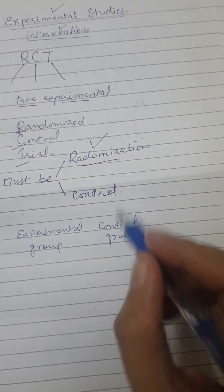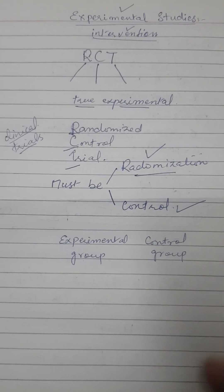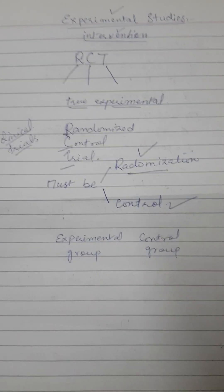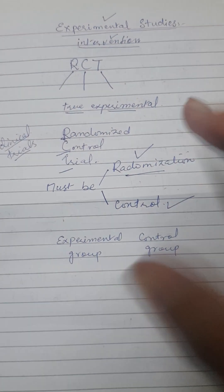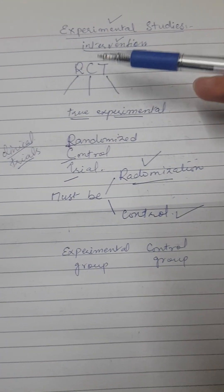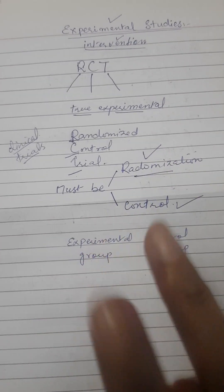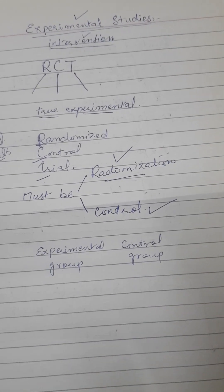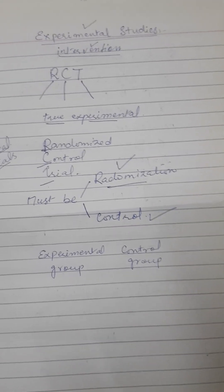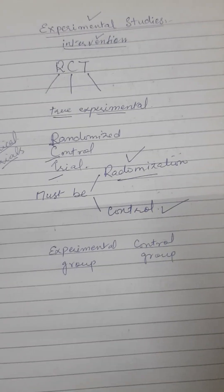There must be randomization and, obviously, there must be a control group. It is not just that you select an experimental group, give them a drug, and publish your results. Without a control group, an RCT cannot be called an RCT. True experimental studies must fulfill these two criteria: randomization and a control group.